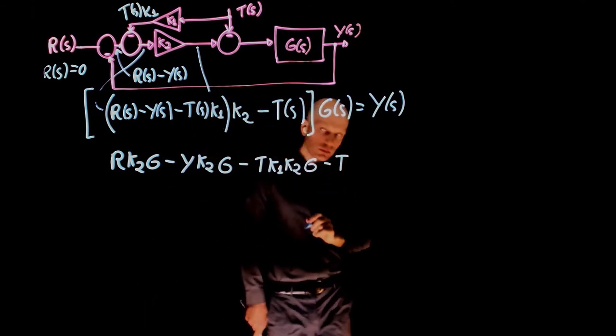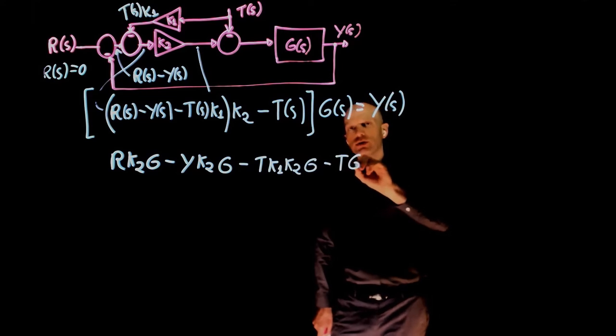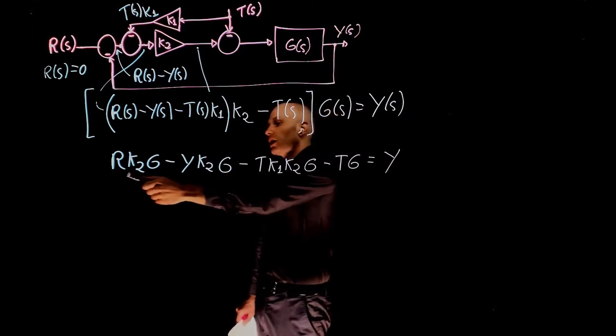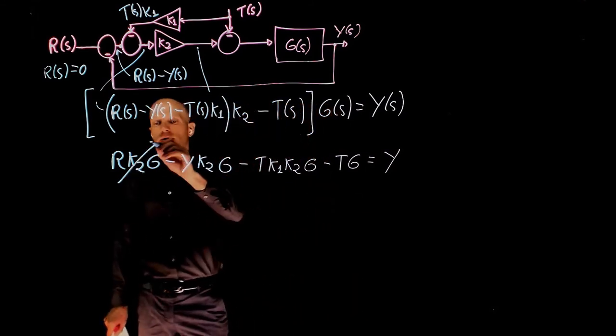R times K2 times G minus Y times K2 times G minus T times K1 times K2 times G minus T times G equals Y. Now because we want y to go to zero, we have to set R to zero. So this entire term here is zero.